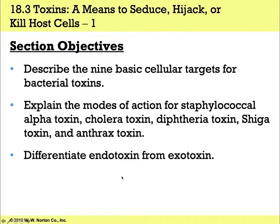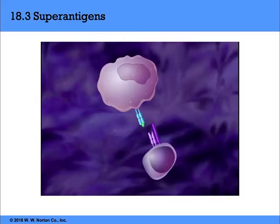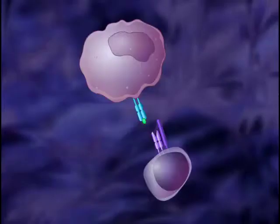In this section we'll talk about different cell targets for bacterial toxins, explain modes of action for a selected set of toxins, and differentiate an endotoxin from an exotoxin. The first class of molecules to look at is superantigens.